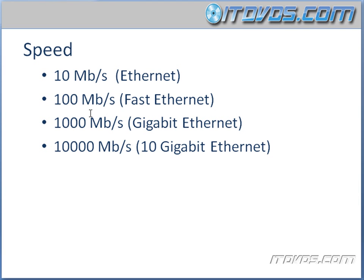Let's say a host is connected to a switch with an Ethernet cable. If you're trying to run at gigabit, the network card in the host has to support gigabit speeds, you have to use the right cable that supports gigabit speed, and the switch port you're connected to has to support gigabit speed. If one of those components is missing, you're going to drop down to a lower speed — whatever is supported on all three pieces.